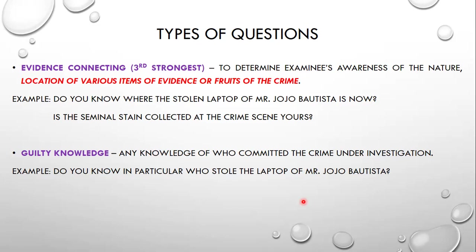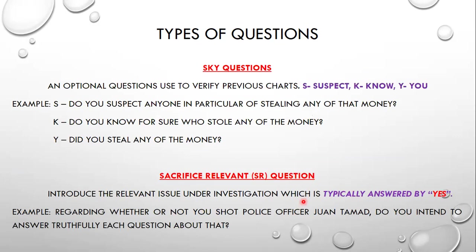All polygraph testing techniques normally begin with a pre-test interview. Another type is the SKY question, an optional question used to verify the previous chart. S stands for suspect: 'Do you suspect anyone?' K stands for know: 'Do you know for sure who stole them?' And Y stands for you: 'Did you do it?' The SKY type questions are optional.